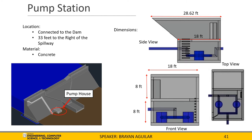The pump station will contain both pumps and be used to maintain them. The pump station will be located at the bottom of the dam, three feet to the right of the spillway, with stairs leading down to it from the top of the dam. The pump station will be constructed out of concrete. The ground floor of the pump station will be 8 feet tall, 18 feet wide, with a 28.62-foot roof and an 18-foot long floor. The underground floor will contain both of the pumps and will be 8 feet tall by 18 feet wide and 80 feet long.